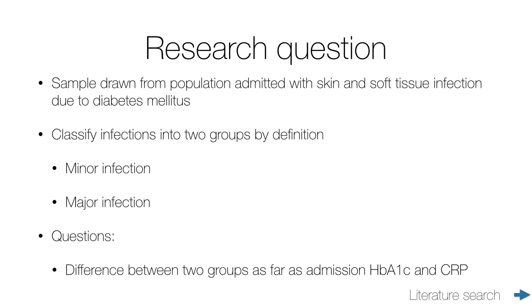Our research question here is very simple. We're going to compare the difference between our two groups — minor infections and major infections — and compare the admission HbA1c and the admission CRP. HbA1c is a marker in a patient's blood that tells us how good their blood sugar level control has been in the recent past. CRP stands for C-reactive protein, also a blood marker. Both can be tested in the laboratory from a blood sample. CRP is a marker for infection or inflammation.